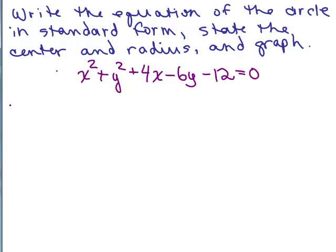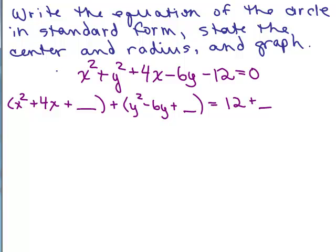So what we do is we're going to use completing the square. We're going to put the x squared and x term together so we have x² + 4x and we're going to have to add something to get a perfect square. Then we're going to put the y² and the -6y together and add something to make it a perfect square.